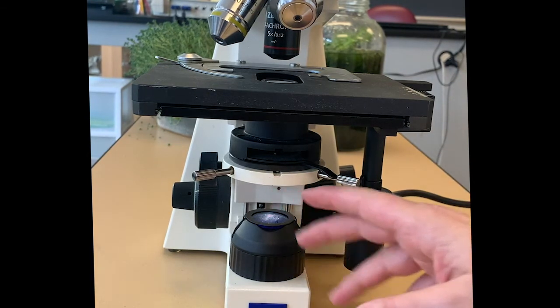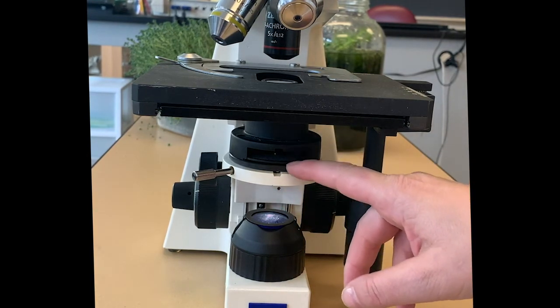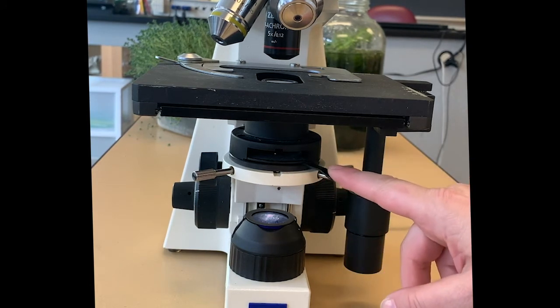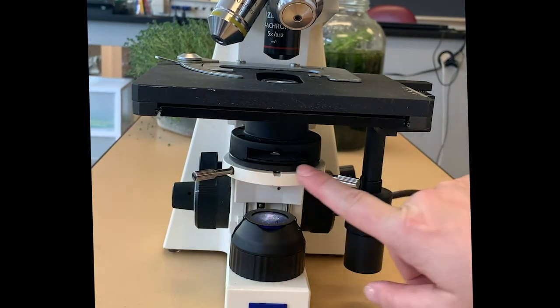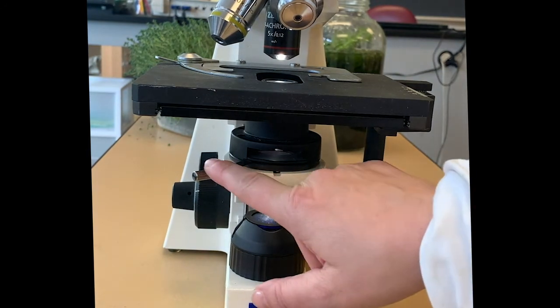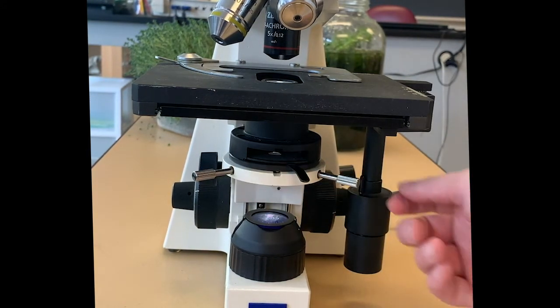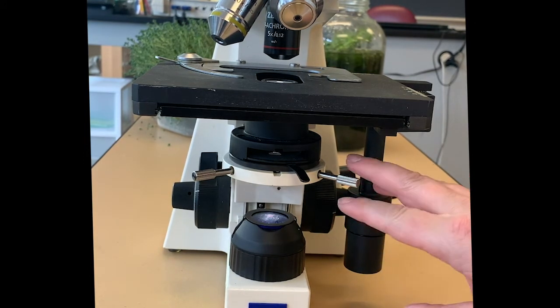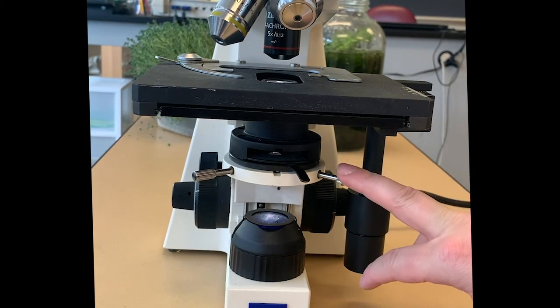Right above that is our condenser unit. That helps to focus the light through the specimen. We also have a lever for the iris diaphragm right here and that will also help with focusing the light. We have these little screws here too that will help to center the light. When we do Kohler illumination, we'll come back to these parts.